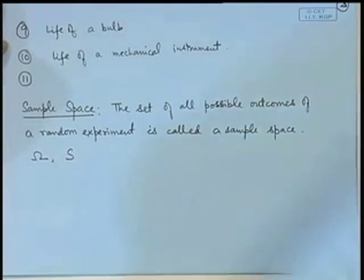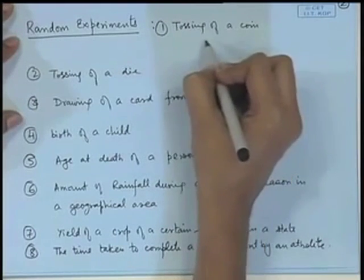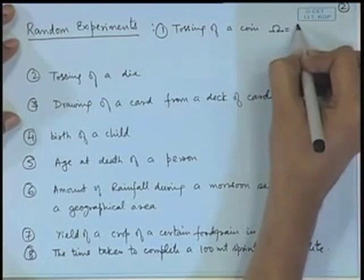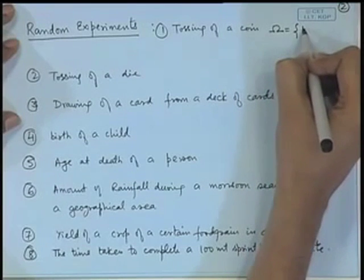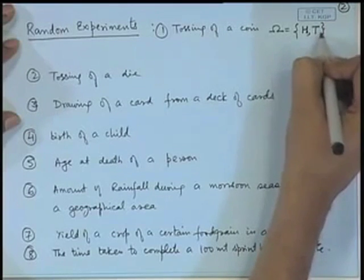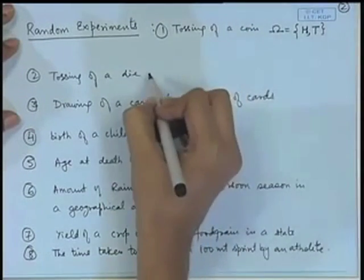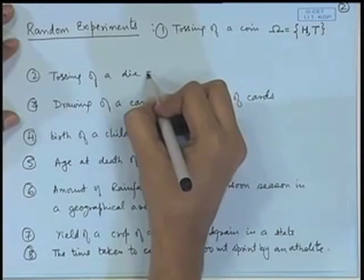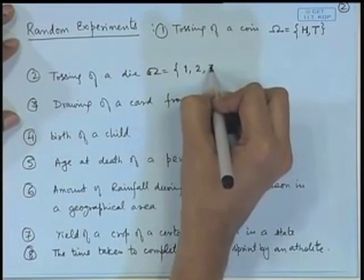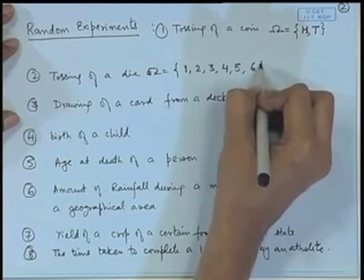Let us consider some examples. Suppose we are considering tossing of a coin. We may consider the outcomes as head or tail — if we denote by H the occurrence of head upwards and by T the occurrence of tail, then the sample space can be described as {H, T}. If we consider tossing of a die, the sample space may be described as the occurrence of the face uppermost, so the sample space will be the set {1, 2, 3, 4, 5, 6}.